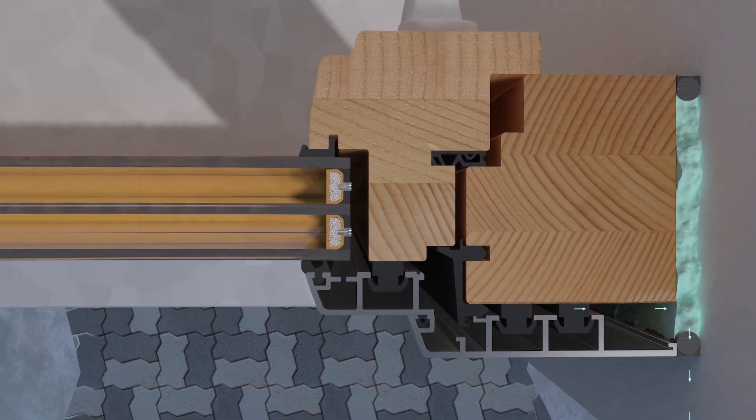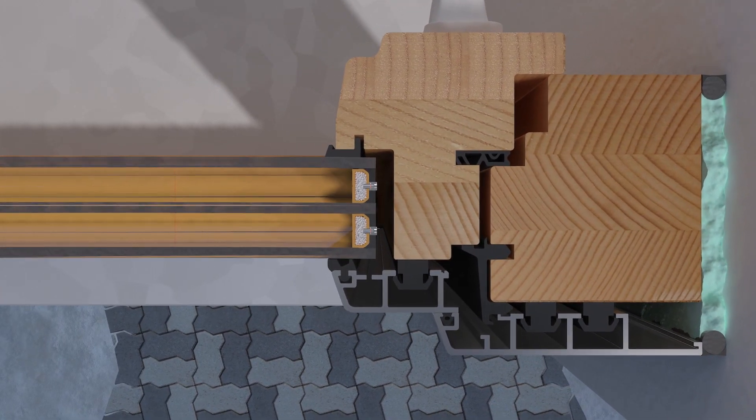For triple glazing, a UG value of 0.6 watts per square meter Kelvin is possible. The insulating glass has a normal service life.